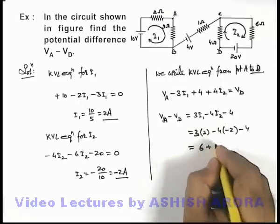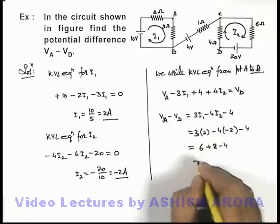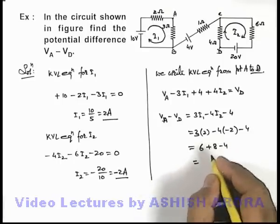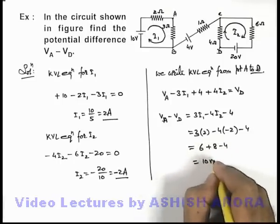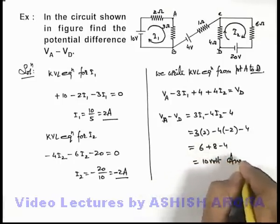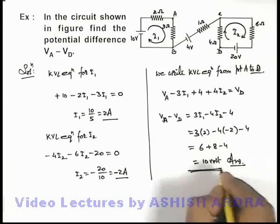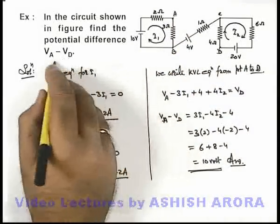That'll be 6 plus 8 minus 4, and it'll be 14 minus 4, so that'll be 10 volt. That'll be the answer to this problem, the potential difference across terminals A and D, what is asked in the problem.